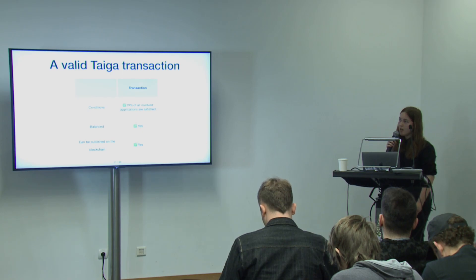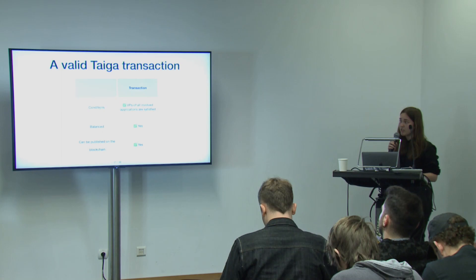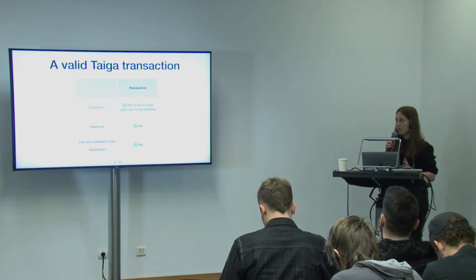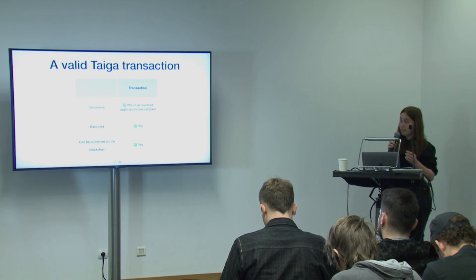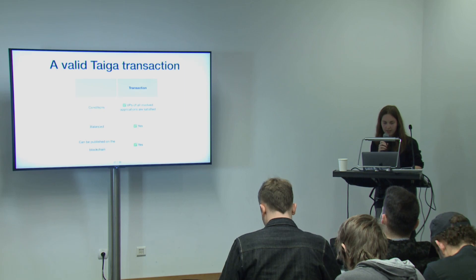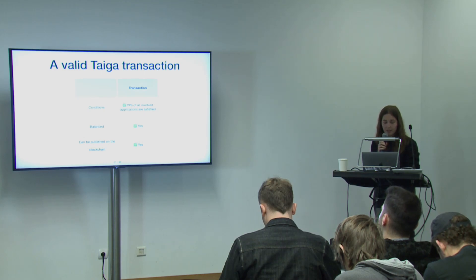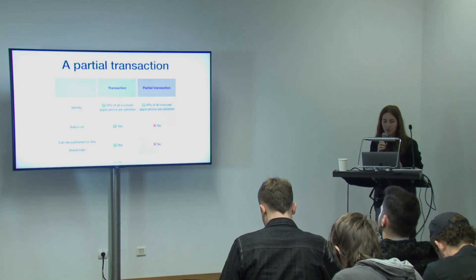A balanced transaction means that all notes carry some numeric value. In some applications it's natural, like a cryptocurrency where five ether is just five ether. But in some applications it can be more abstract — all notes have value. A balanced transaction means that for each application type, the total value of input notes equals the total value of output notes. So a valid transaction has validity predicates satisfied and is balanced, and such a transaction can be published on the blockchain.